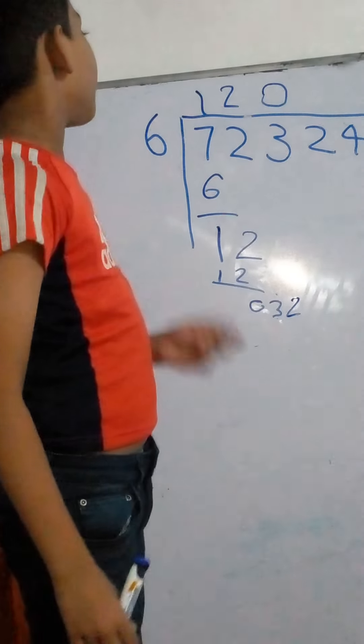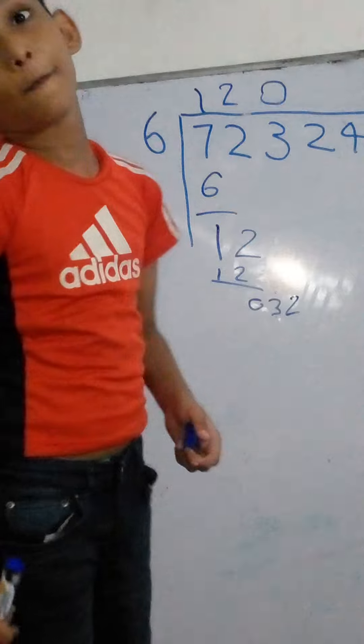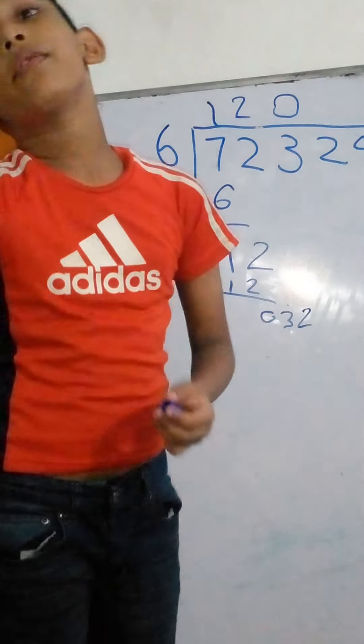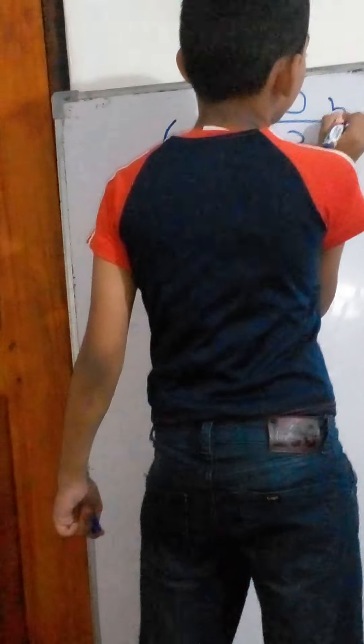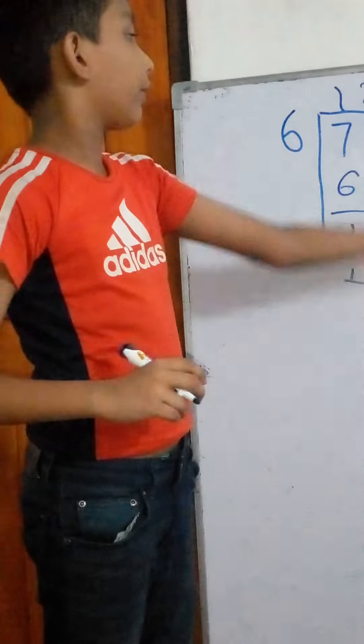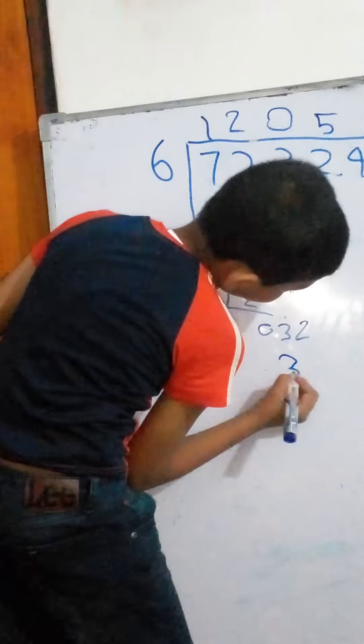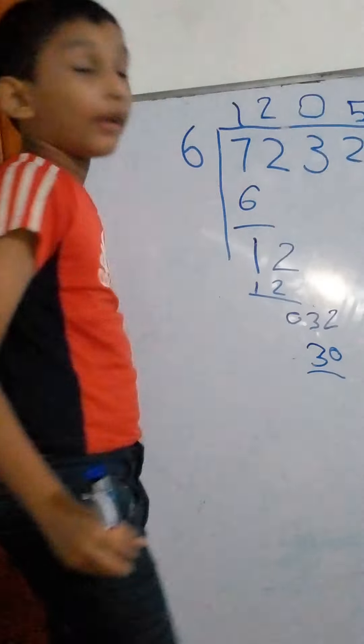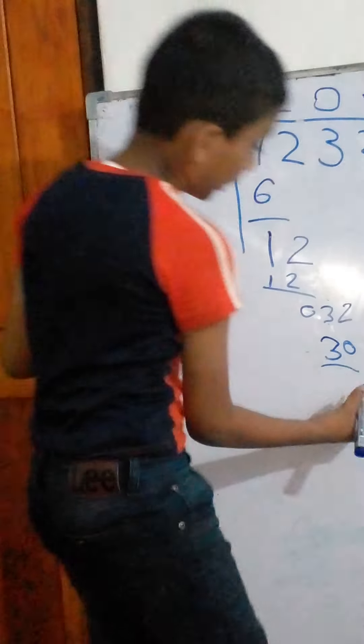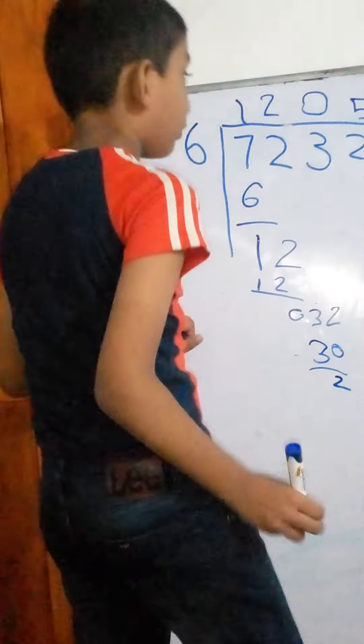Thirty-two divided by six is five. Five. Six times five is thirty. Thirty-two minus thirty is two.